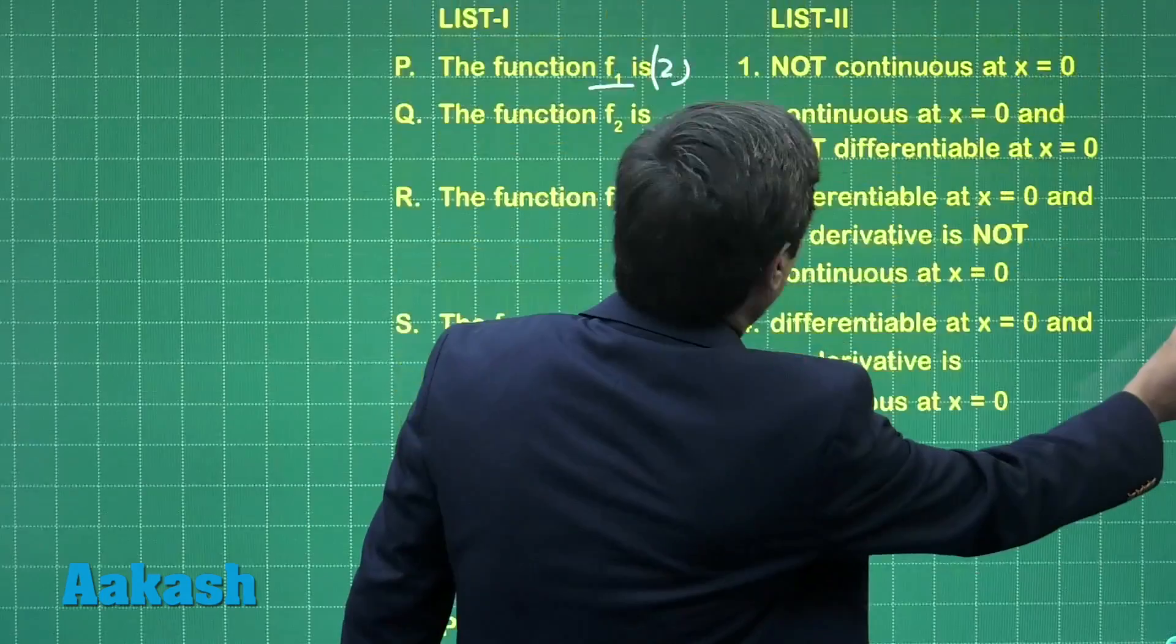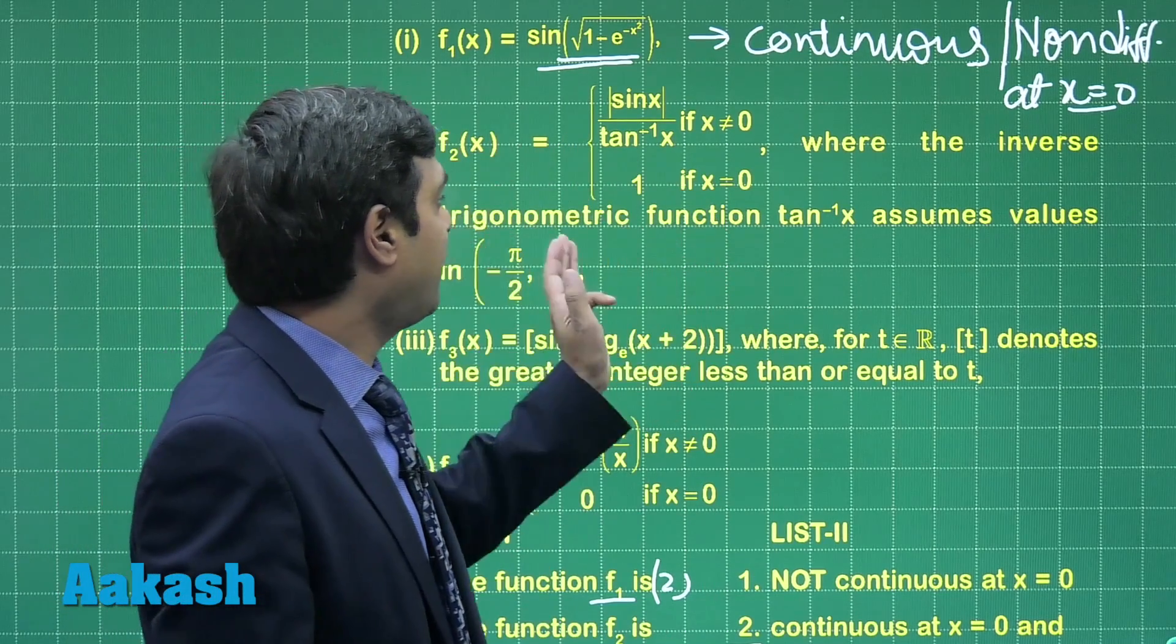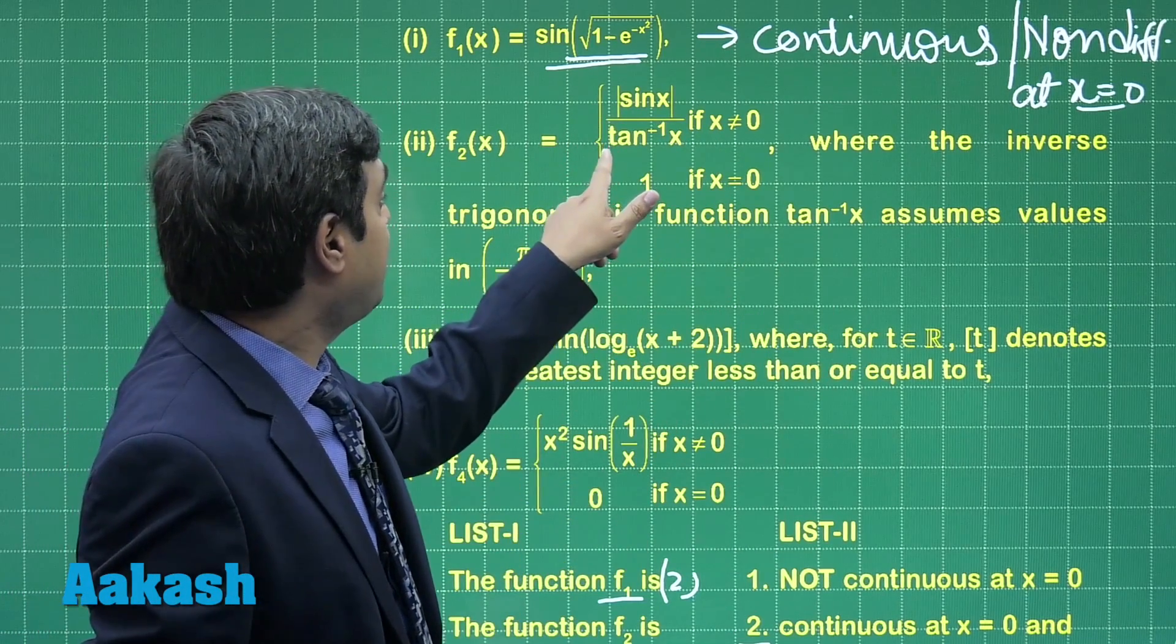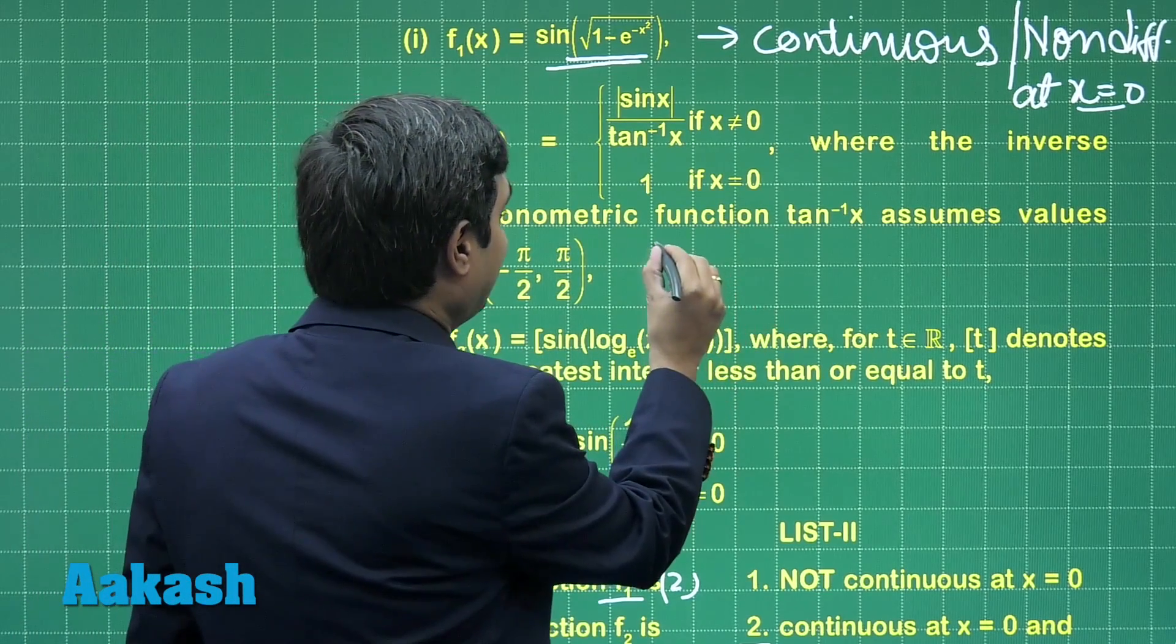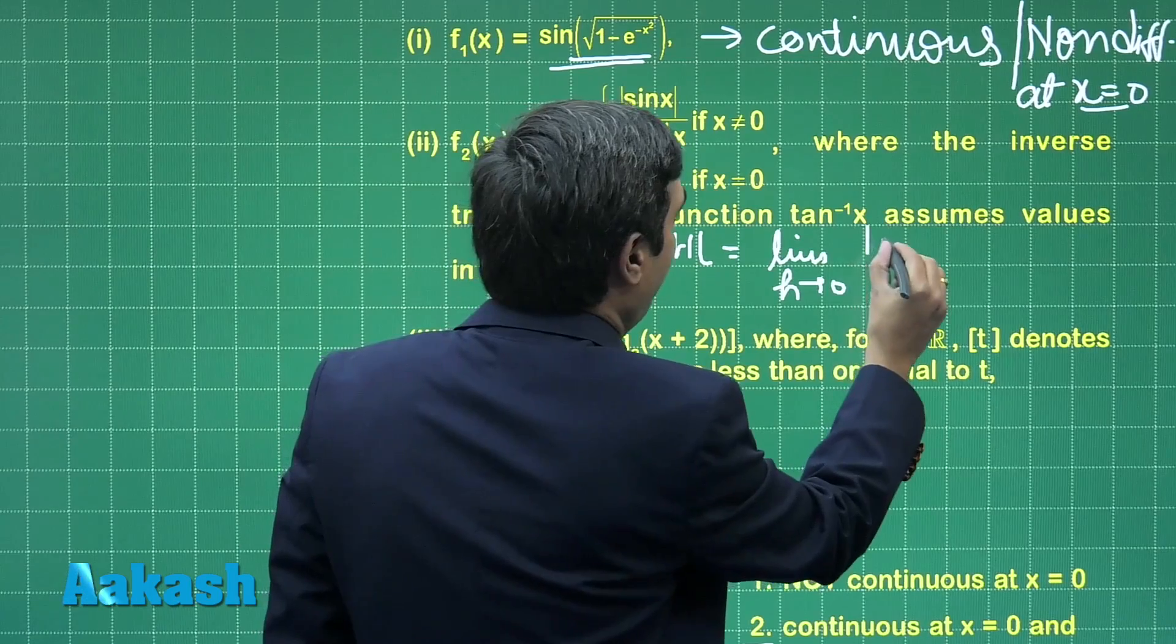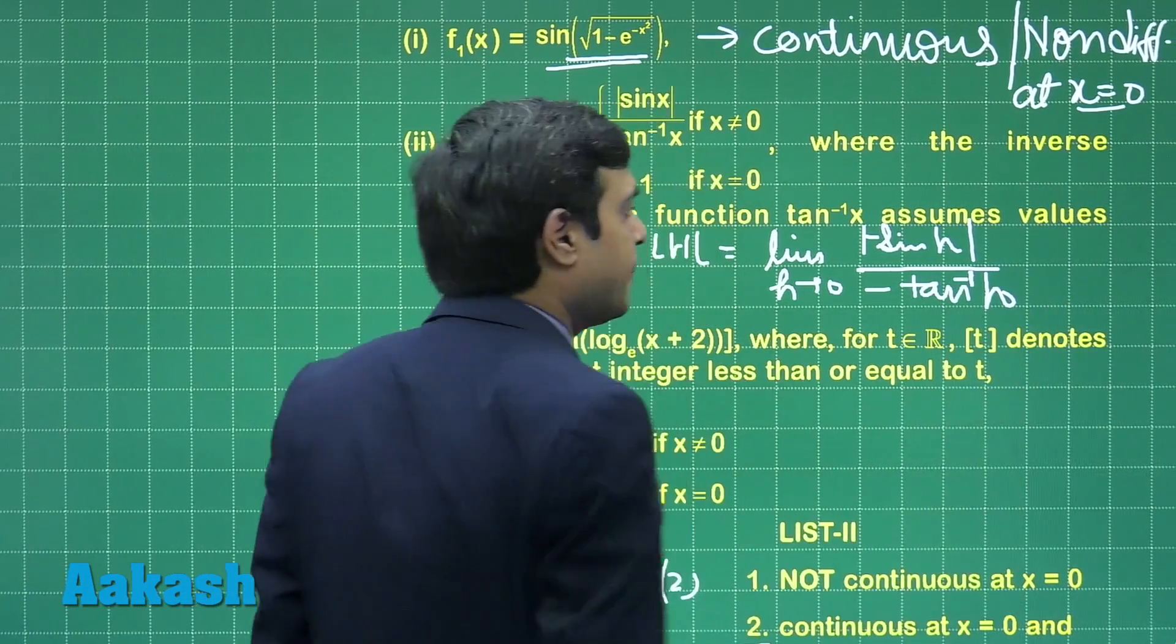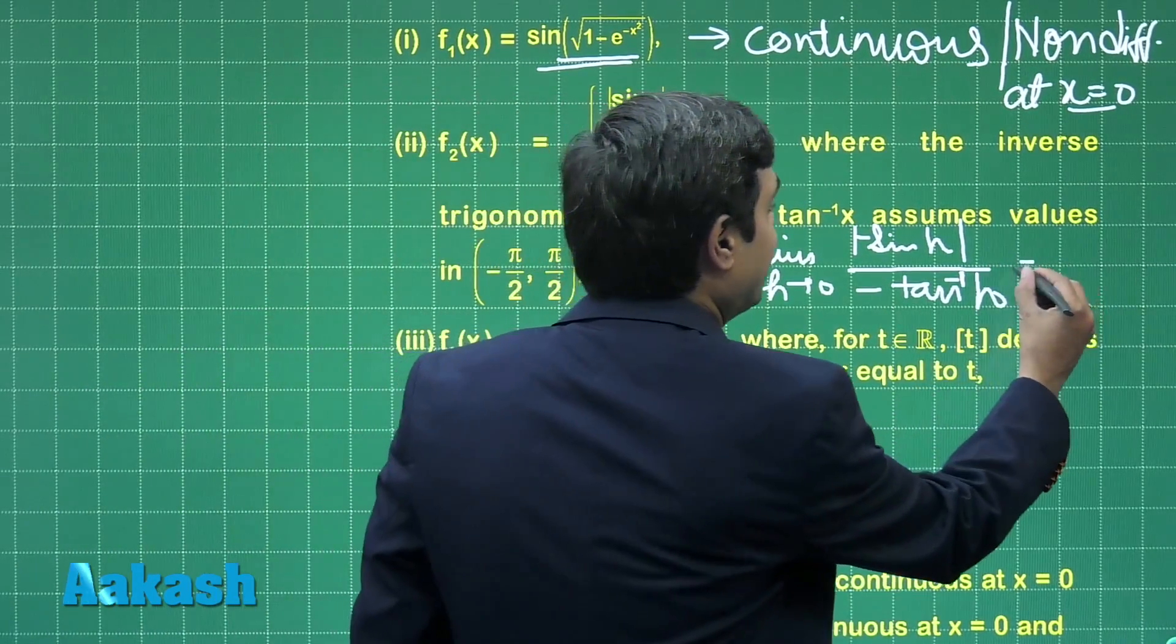Next function f2(x) is |sin x| / tan⁻¹x when x is non-zero and 1 if x is 0. When x is approaching to 0 from the left-hand side, what we observe is it becomes -sin h while denominator is simply -tan⁻¹h. -sin h is under the mod sin, meaning it becomes +sin h. In this case, LHL is limit h approaching to 0, |sin h| with a negative sign divided by -tan⁻¹h. It becomes sin h upon -tan⁻¹h. We simply divide numerator and denominator by h to get the answer as -1.